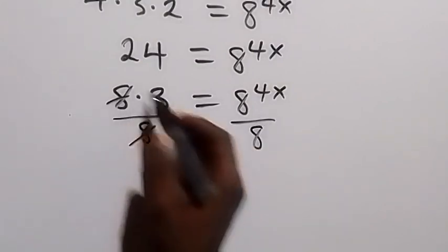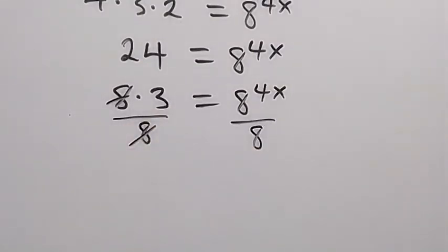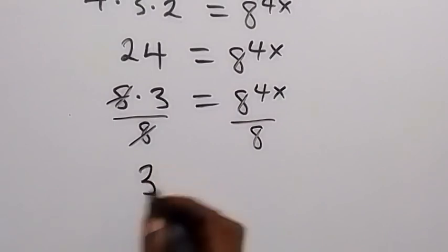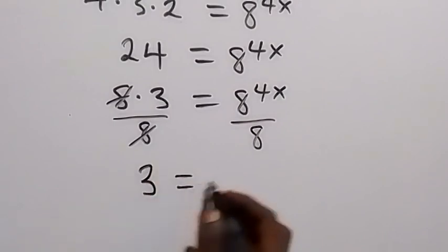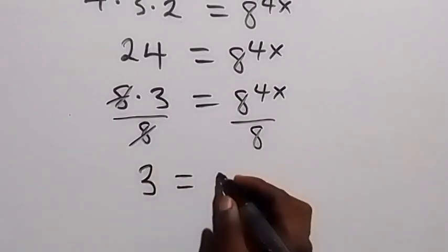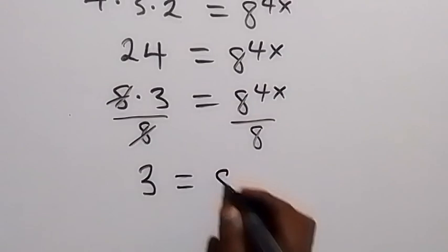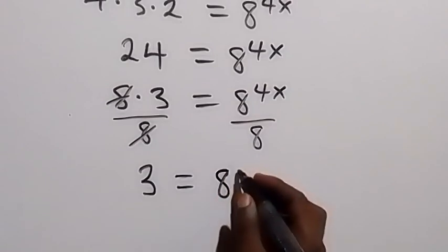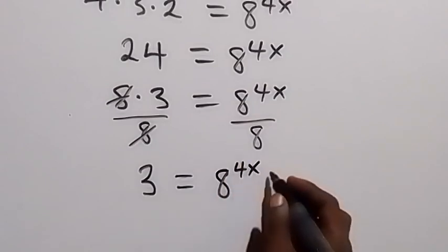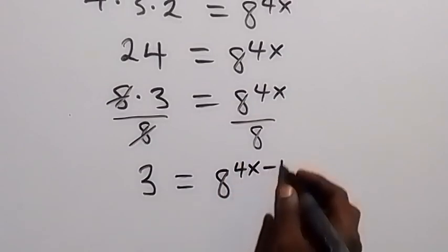Dividing both sides by 8, we cancel the 8 here. What we have left is 3 equals 8 raised to power 4x minus 1, applying the law of indices.